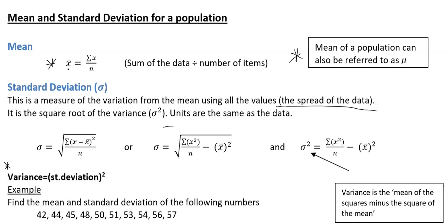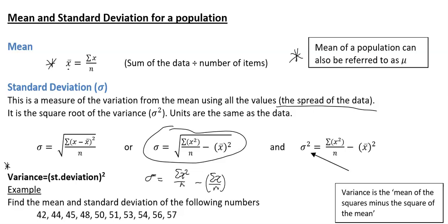Variance equals standard deviation squared, and standard deviation equals the square root of the variance. The formula for standard deviation is: σ = √(Σx² / n − x̄²). Equivalently, you can write this as √(Σx²/n − (Σx/n)²). If you want the variance, it's just that expression without the square root.